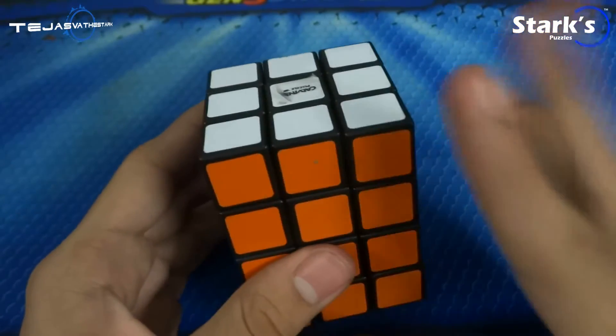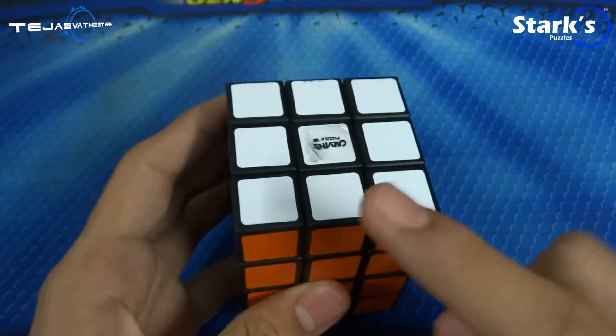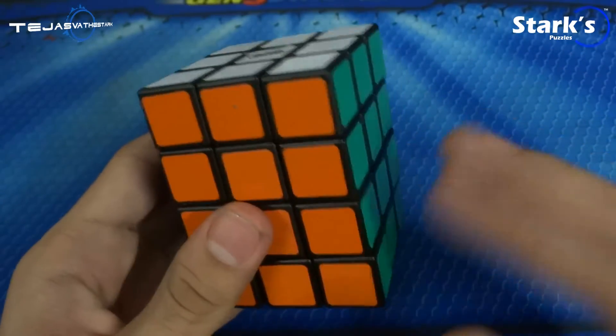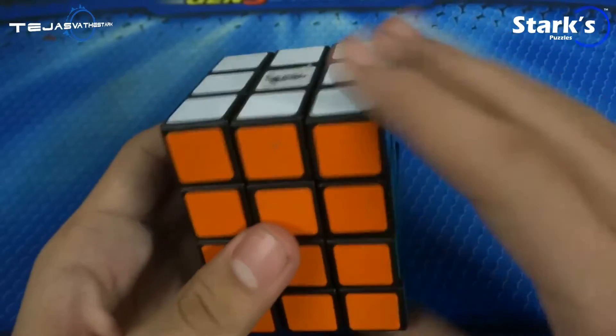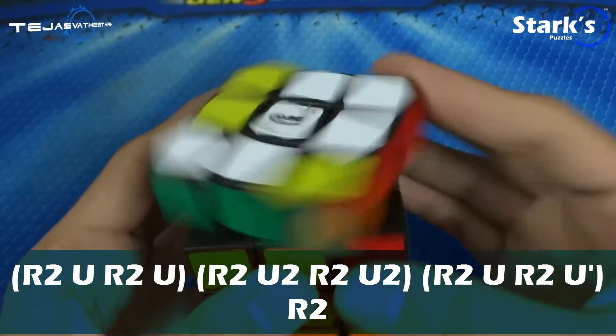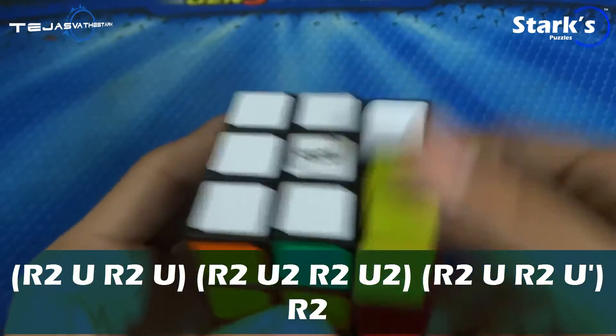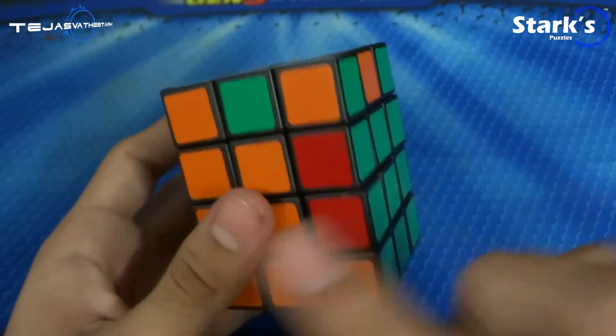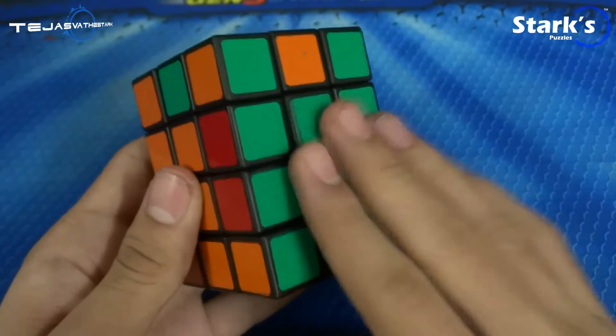The fourth one is the adjacent edge swap. Basically it swaps this and this. Also this layer will be flipped again. The algorithm for this is r2 u r2 u r2 u2 r2 u2 r2 u r2 u prime r2. As you can see, those two got swapped and this got flipped all over again.